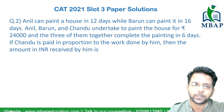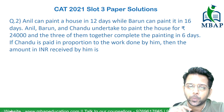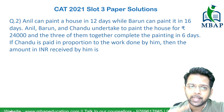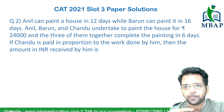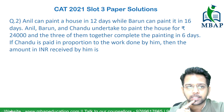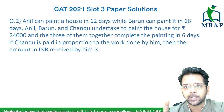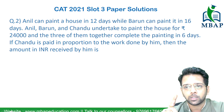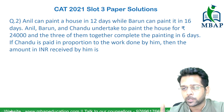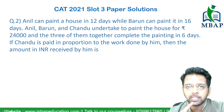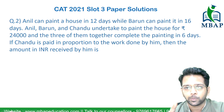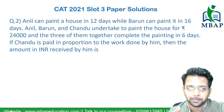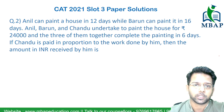Let's have a look at the next question. Read the question well. The question says: Anil can paint a house in 12 days, while Bharan can paint the same house in 16 days. A, B and C undertake to paint the house for Rs. 24,000 and all 3 of them get the work done in 6 days. If C is paid in the proportion of the work done by him, then what is the amount received by C?